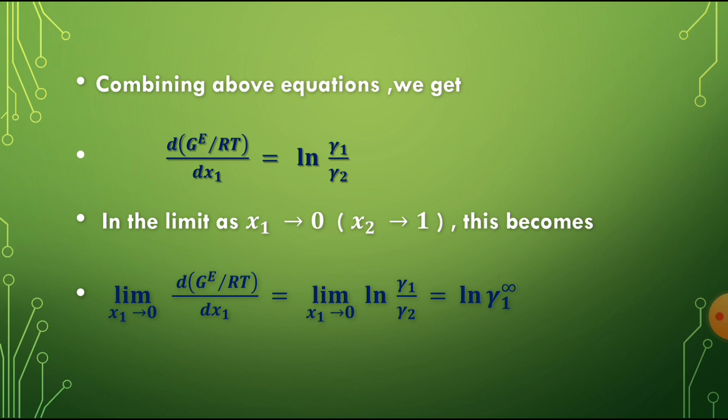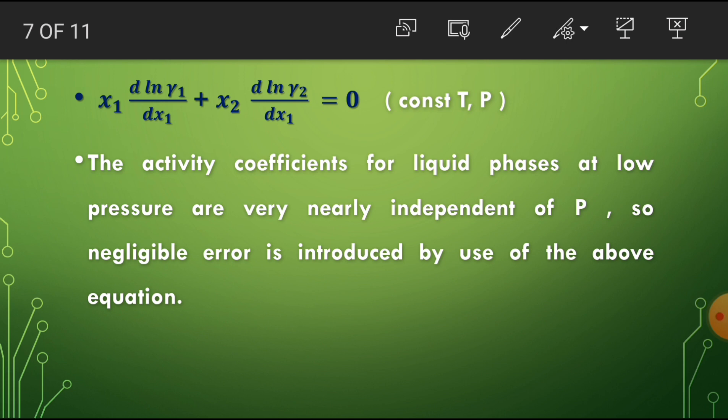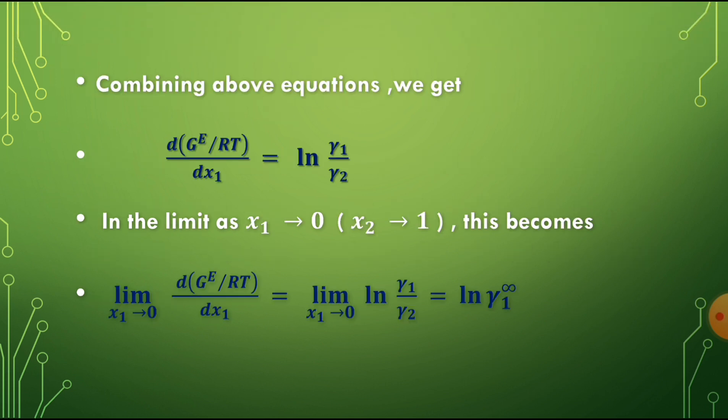Combining the above equations, since x1 d(ln gamma1)/dx1 plus x2 d(ln gamma2)/dx1 equals 0, substituting into the derivative expression gives d(G_E/RT)/dx1 equal to ln(gamma1/gamma2). In the limit as x1 tends to 0, the equation becomes: the limit of d(G_E/RT)/dx1 equals the limit of ln(gamma1/gamma2) as x1 tends to 0.